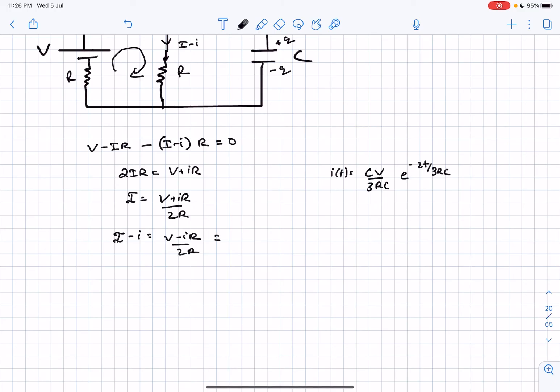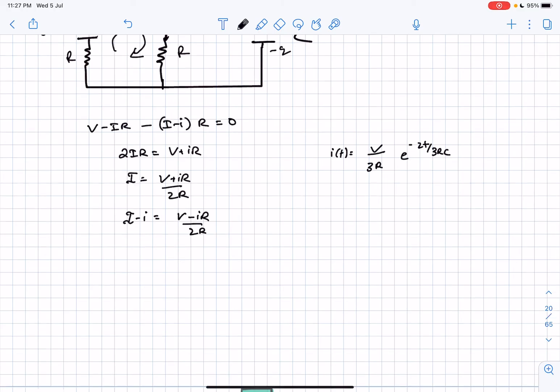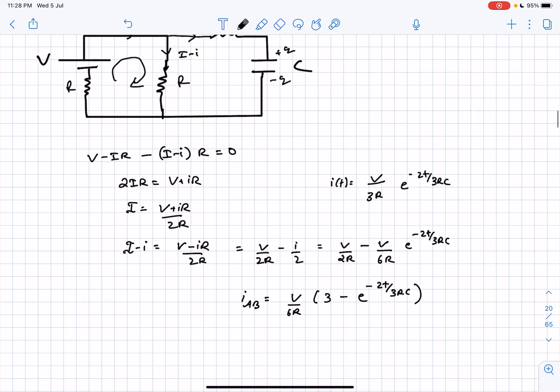Substituting the value of i into this equation, this will be the current in branch AB as a function of time.